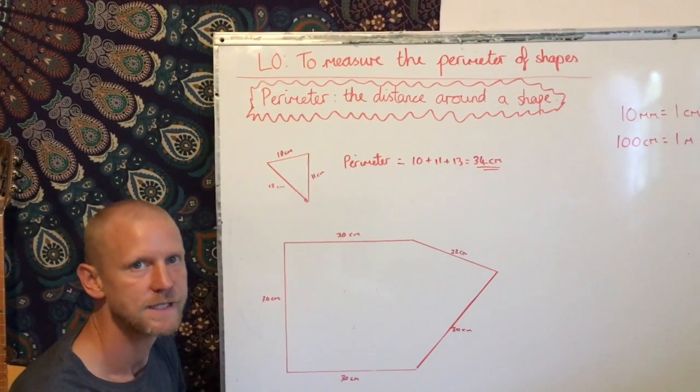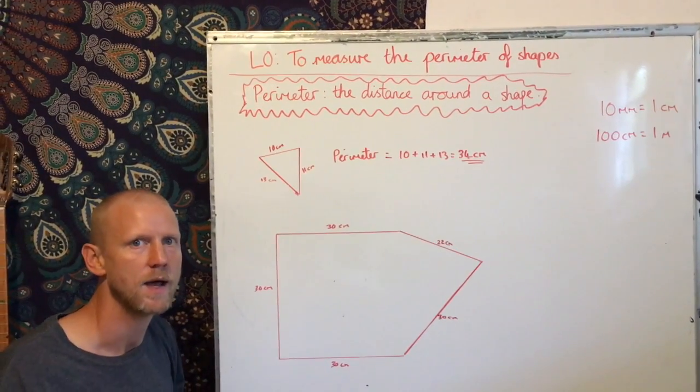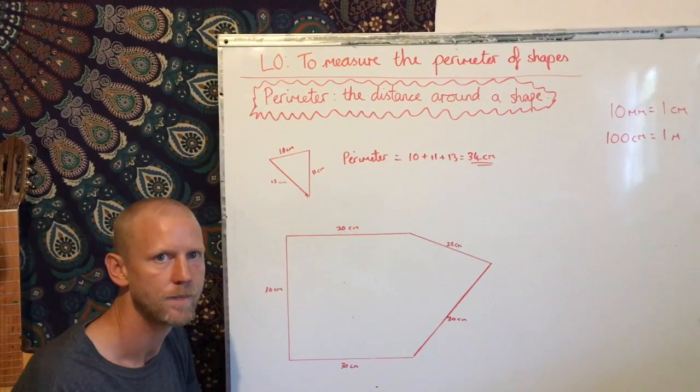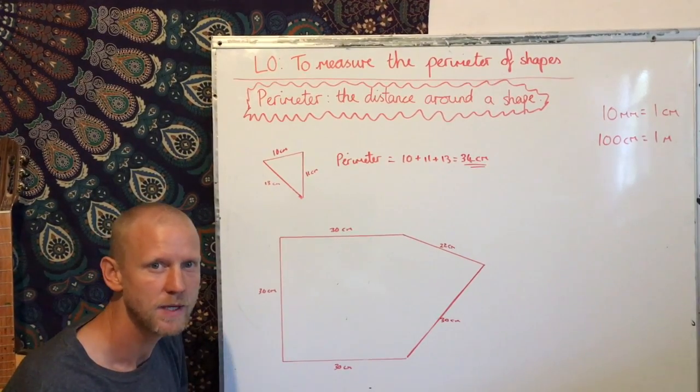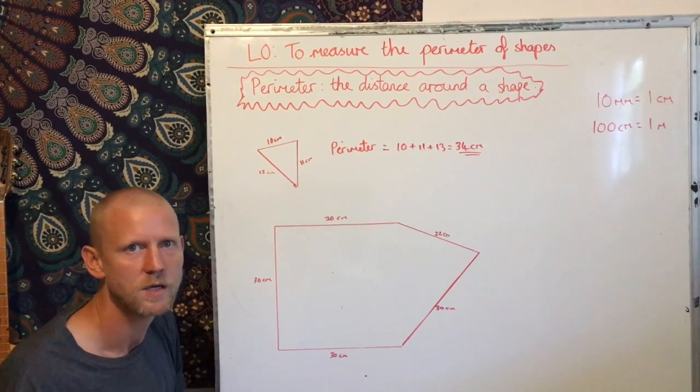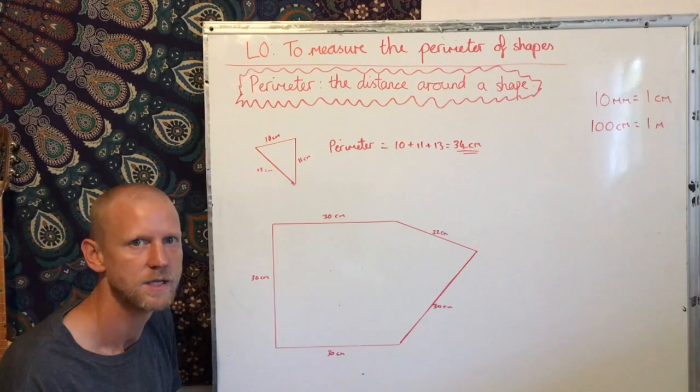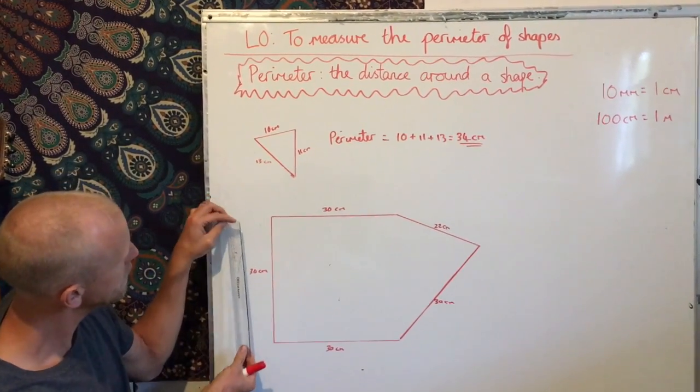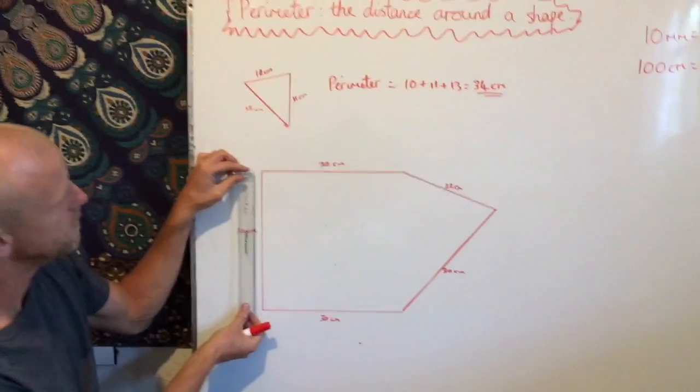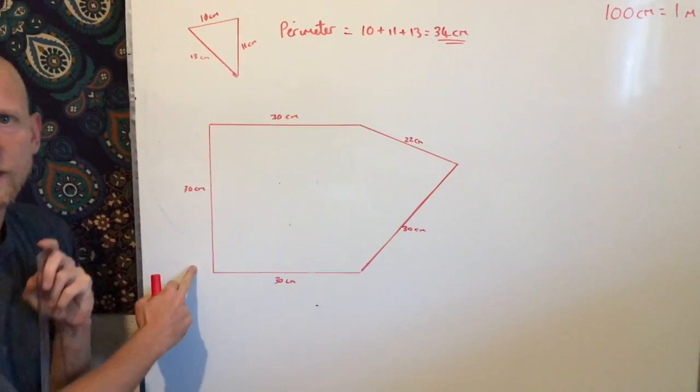For your task today, you need to draw the outline of your theme park. Find some paper to stick together or card or anything you have in the house to make it. And then I want you to measure, using a ruler, the length of every side.